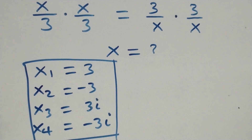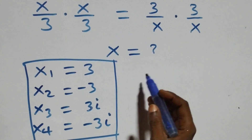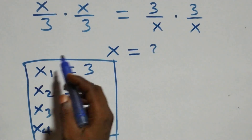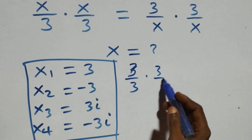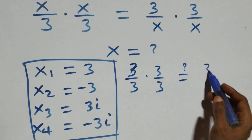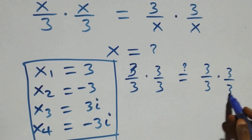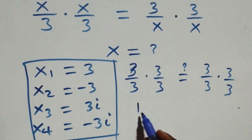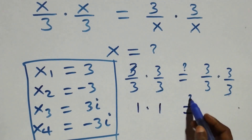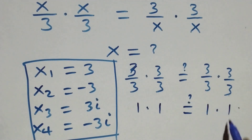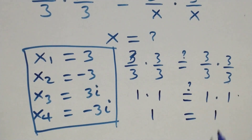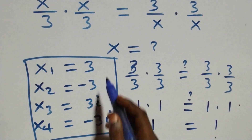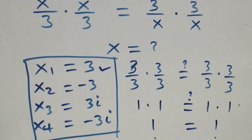We substitute x equals three into the equation. We get three over three times three over three, which should equal three over three times three over three. Three over three is one, so we have one times one equals one times one. One equals one — the left hand side equals the right hand side, so x equals three satisfies the problem.